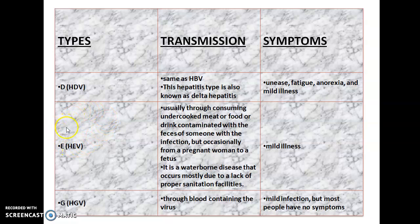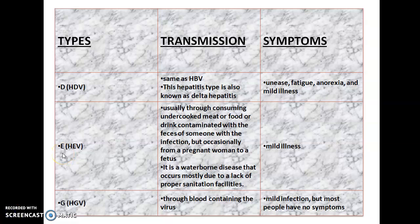Next is Hepatitis E. The mode of transmission is usually through consuming undercooked meat or food or drink contaminated with the feces of someone with the infection, but occasionally from a pregnant woman to a fetus. It is a waterborne disease that occurs mostly due to a lack of proper sanitation. Major causes include improper hygiene and sanitation, such as defecation in open areas, unhealthy drinking water, consumption of raw foods, and many more.